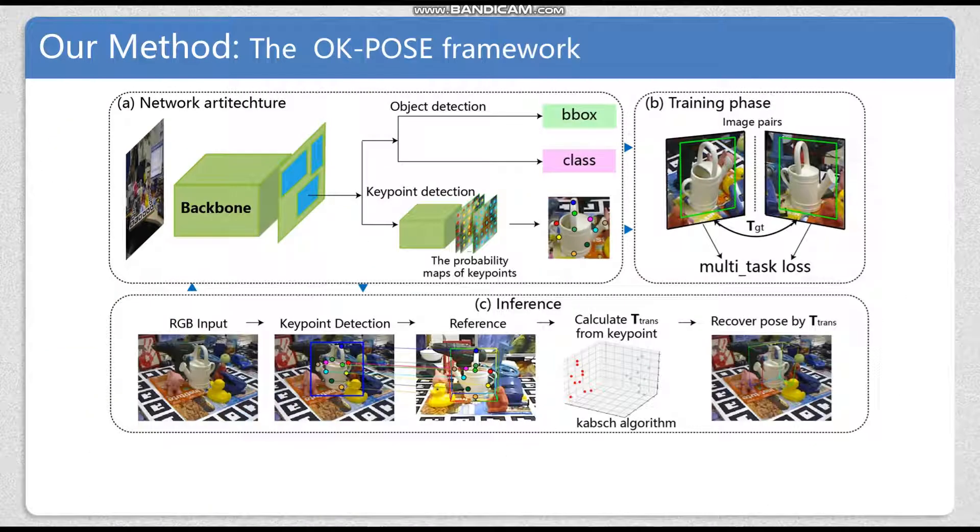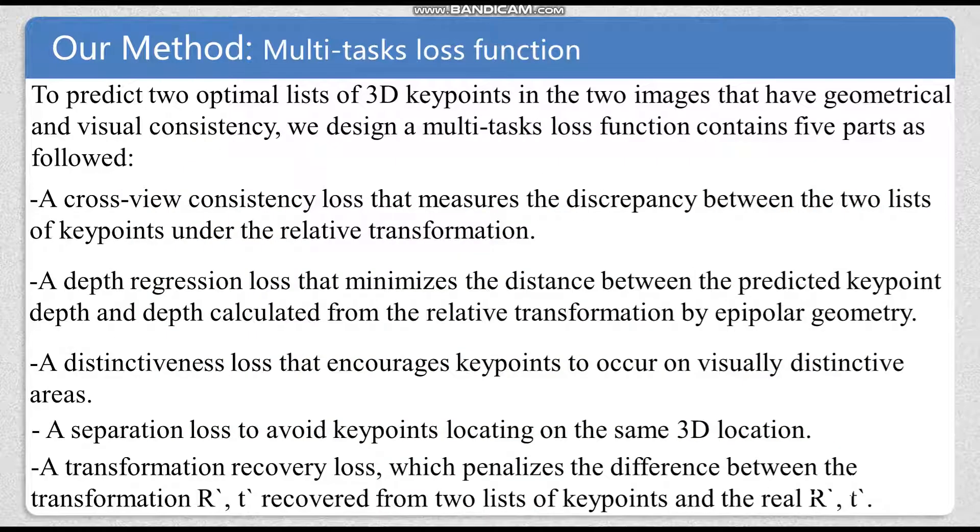In this paper, we develop a keypoint-based object pose detection method called OK-POSE. We use pairs of images with relative transformations between their viewpoints to automatically discover object's 3D keypoints, which are geometrically and visually consistent, by a designed multi-task loss function.